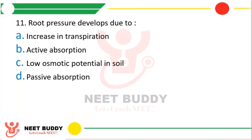Question 11: Root pressure develops due to — increase in transpiration, active absorption, low osmotic potential in soil, or passive absorption. The correct answer is option B, active absorption.